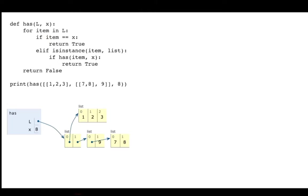I'm going to loop over everything in the list. If the thing I'm looping over is exactly what I want, then problem solved — I know it's true and I'm done. Otherwise, if the thing I'm looping over happens to be a list — isinstance(item, list) — then I'm going to do my recursive call: maybe I don't directly contain it, but I contain a list and maybe that list contains it. When I'm done looping over everything and can't find it, I return false.